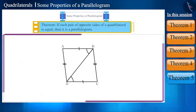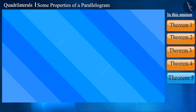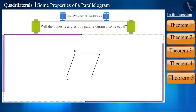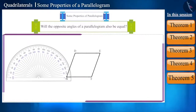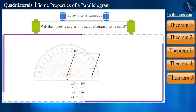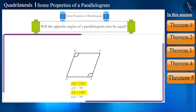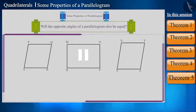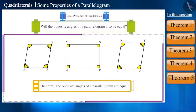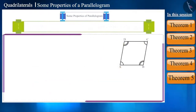We obtained this result for the opposite sides of a parallelogram. Can we say something about its opposite angles? Like the opposite sides of a parallelogram, will the pair of opposite angles also be equal? Let's check. Draw a parallelogram DEFG and, with the help of a protractor, find the measure of its opposite angles. You can see that the measure of angle D and angle F is equal, and the measure of angle E and angle G is also equal. By pausing this video, you can repeat this activity for other parallelograms. You will come to the conclusion that the opposite angles of all parallelograms are equal. This is another property of a parallelogram. But will its converse also be true?